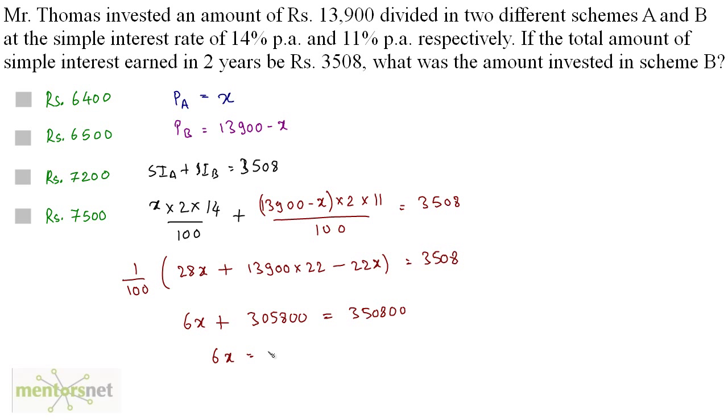Now 28X minus 22X is 6X plus 13,900 times 22 is 305,800 that's 35,800 is equals to this 100 goes to the right that's 350,800. So therefore 6X is equals to 45,000. So therefore X is equals to 45,000 divided by 6 and that is 7,500.